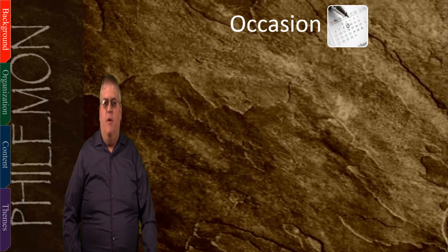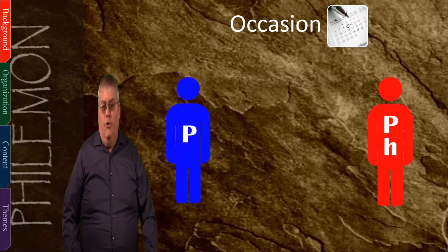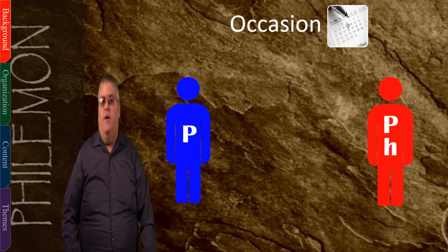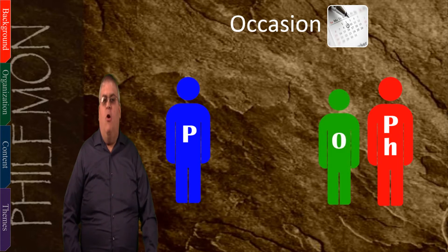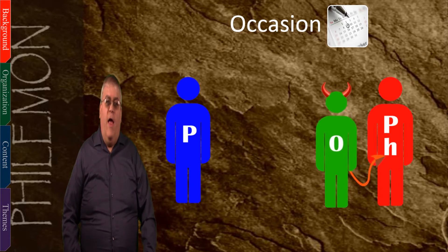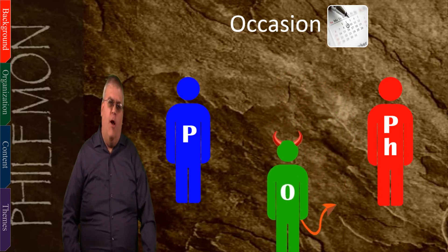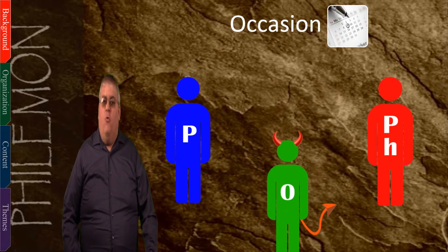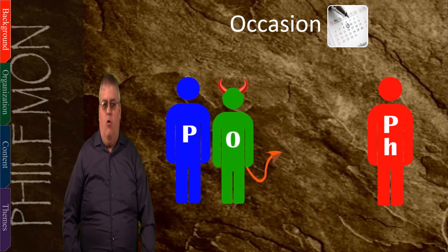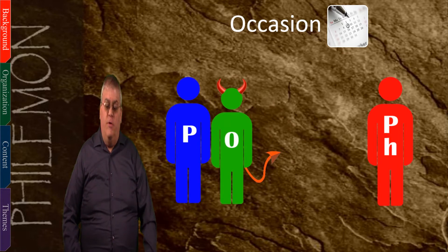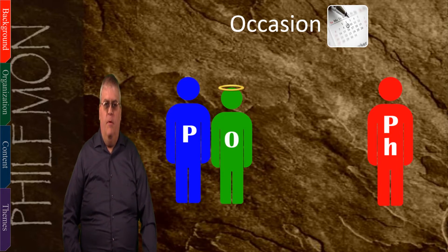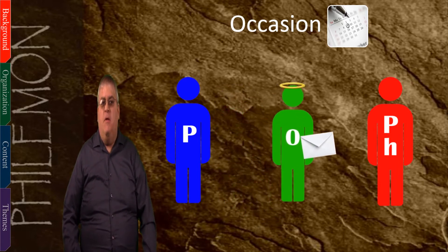The occasion of Philemon can be seen fairly clearly from the book itself. Paul knew Philemon and was somehow influential in his salvation — possibly Philemon was converted at Ephesus. Philemon had a slave named Onesimus who ran away and probably stole from Philemon in the process. In the Roman Empire, runaway slaves were liable to the death penalty. Onesimus somehow made his way to Rome and happened to meet up with Paul, who was in prison there. Onesimus was converted and became very helpful to Paul. Since Paul was sending a letter to the Colossian church, he sent Onesimus back to Philemon, and this letter accompanied him.